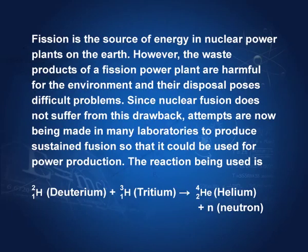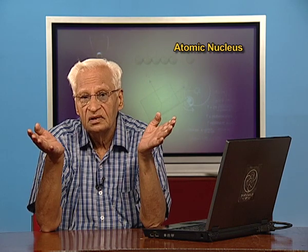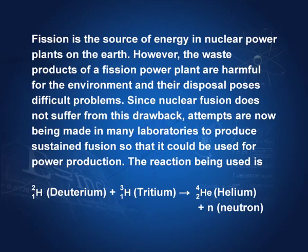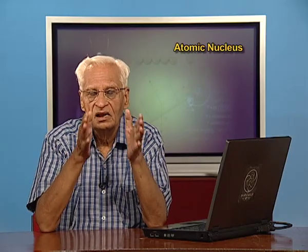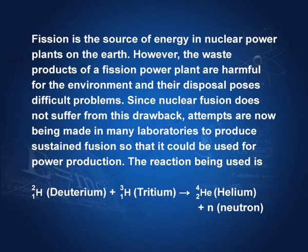Fission is the source of energy in nuclear power plants on Earth, using uranium-235. However, the waste products of a fission power plant are harmful to the environment because they are also radioactive and remain so for a very long time. It is a difficult process to dispose of them safely. Since nuclear fusion does not suffer from this drawback, attempts have been made for the last 30 to 40 years to produce sustained fusion for power production.